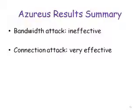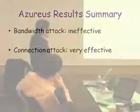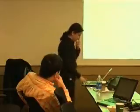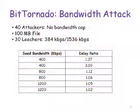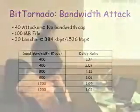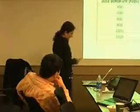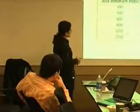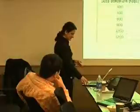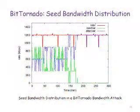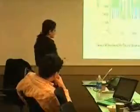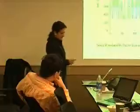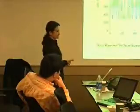In summary: the bandwidth attack was ineffective against Azureus, but the connection attack was very effective. Now let's look at the results for BitTornado. For BitTornado, the bandwidth attack was also not very successful — the delay ratio is generally around 10 percent. The graph shows the seed bandwidth distribution between leechers and attackers in a BitTornado bandwidth attack, and again the attackers cannot monopolize the seed bandwidth.